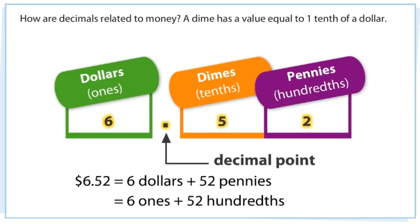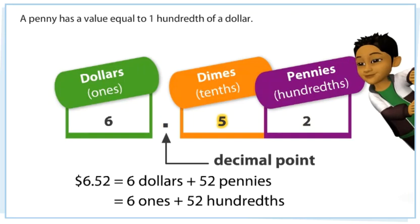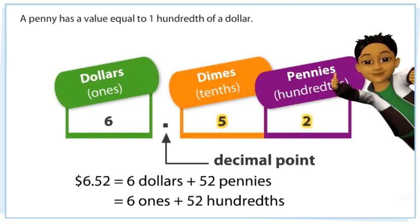How are decimals related to money? A dime has a value equal to one-tenth of a dollar. A penny has a value equal to one-hundredth of a dollar.